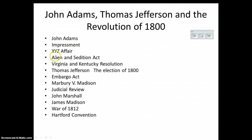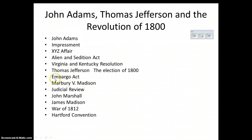Jefferson is able to win the election of 1800, called the Revolution of 1800. He deals with impressment in his own way through the Embargo Act — Jefferson says we are not trading with anyone. This is an excellent way to deal with impressment because if you're not trading with anyone, your sailors won't get hijacked. But this destroyed the economy. The Embargo Act was not a good thing — it helped deal with impressment but had devastating effects on the economy.